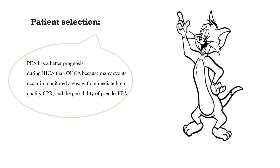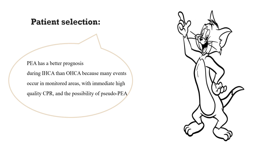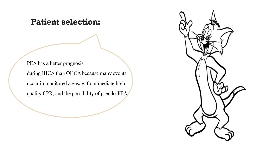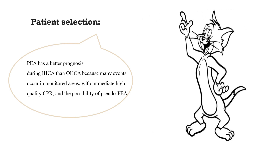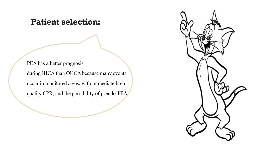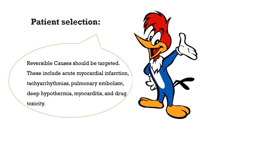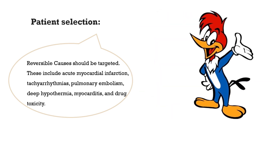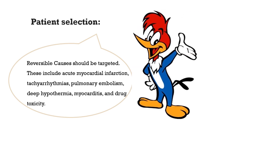For patient selection, pulseless electrical activity has a better prognosis during in-hospital than out-of-hospital arrest, as many events occur in monitored areas with immediate high-quality CPR. Sometimes it may be pseudo-PEA, which is just profound hypotension and low cardiac output, then cardiac arrest; or there may be electromechanical dissociation. Reversible causes should be kept in mind, such as myocardial infarction, tachyarrhythmias, pulmonary embolism, deep hypothermia, myocarditis, and drug toxicity — all of these conditions have better prognosis with ECPR.